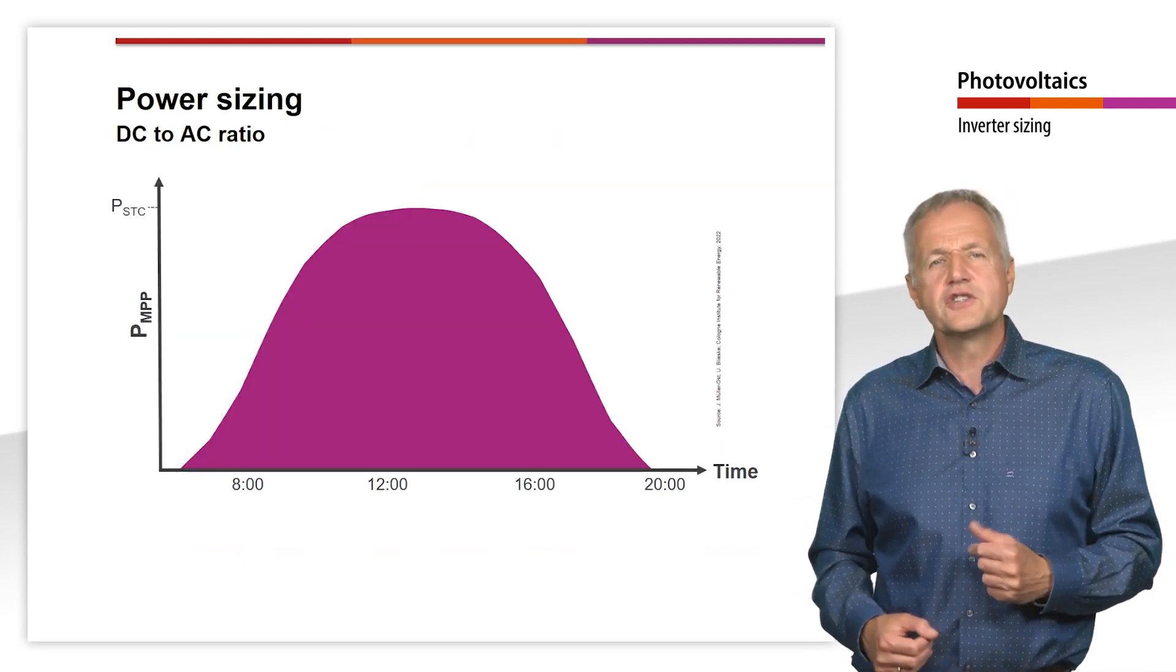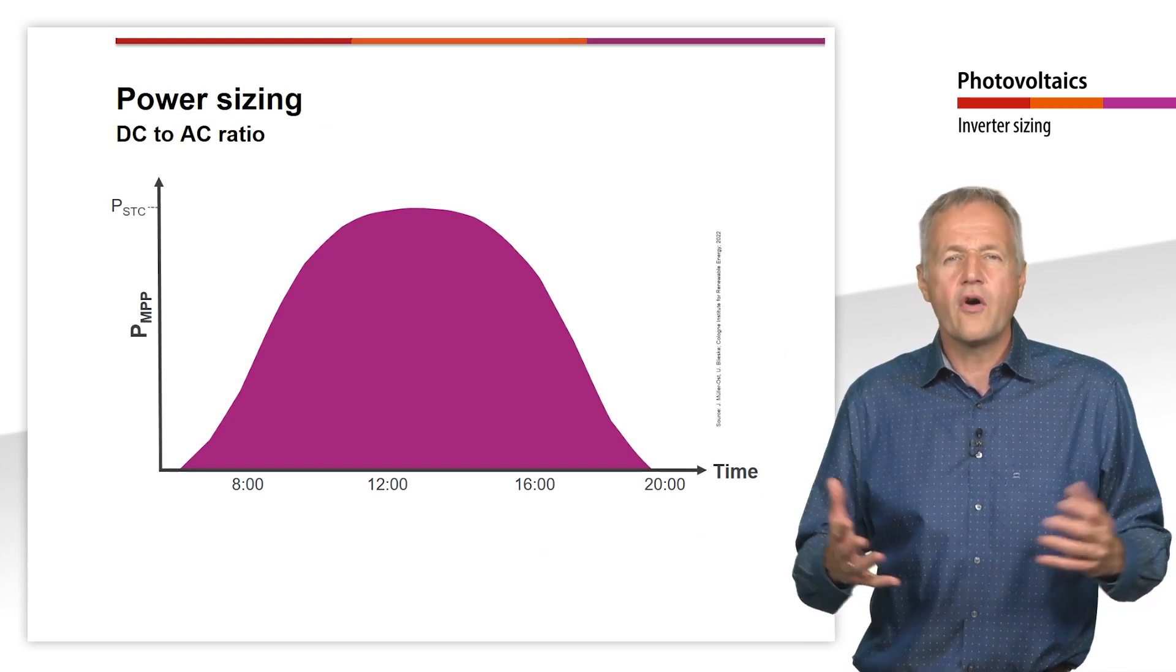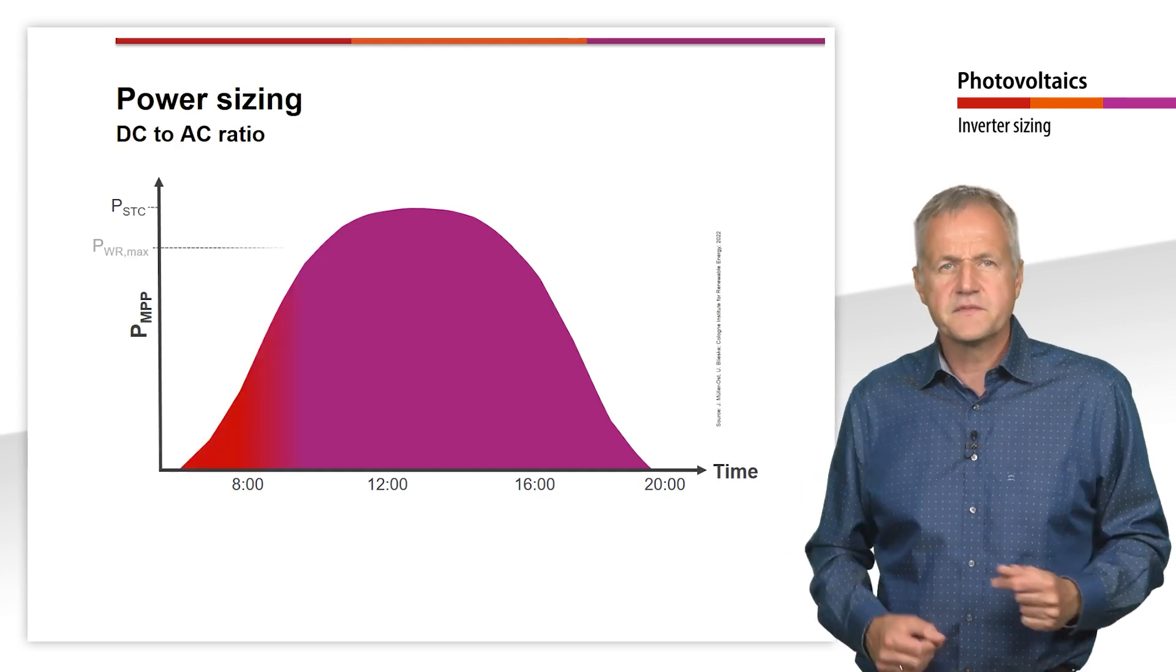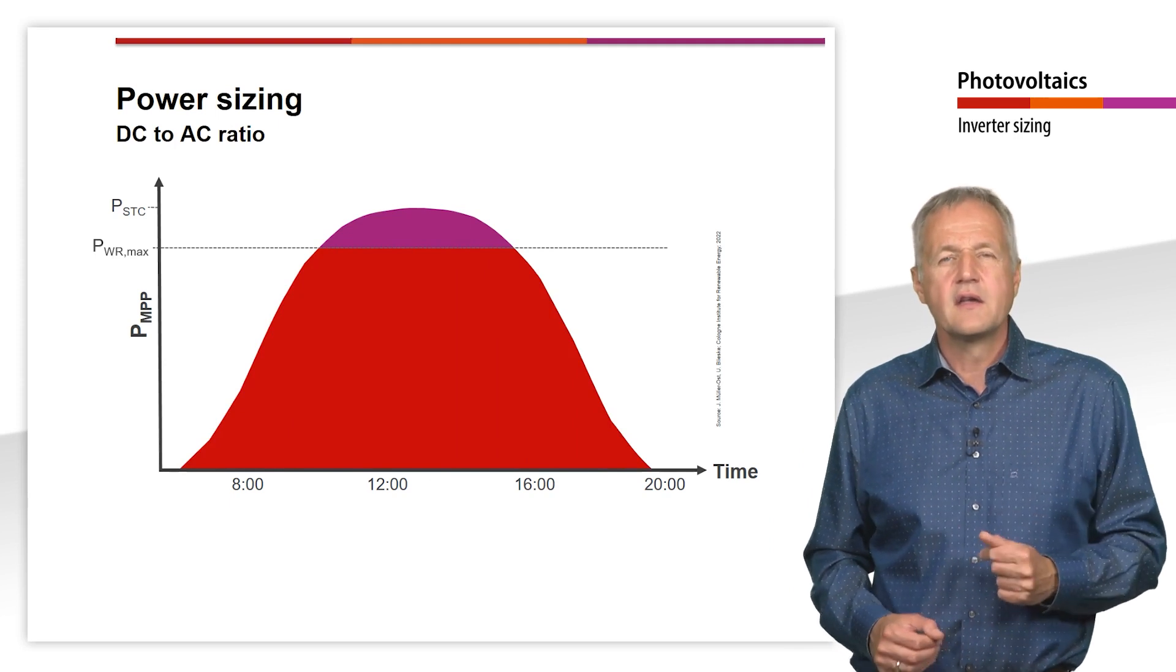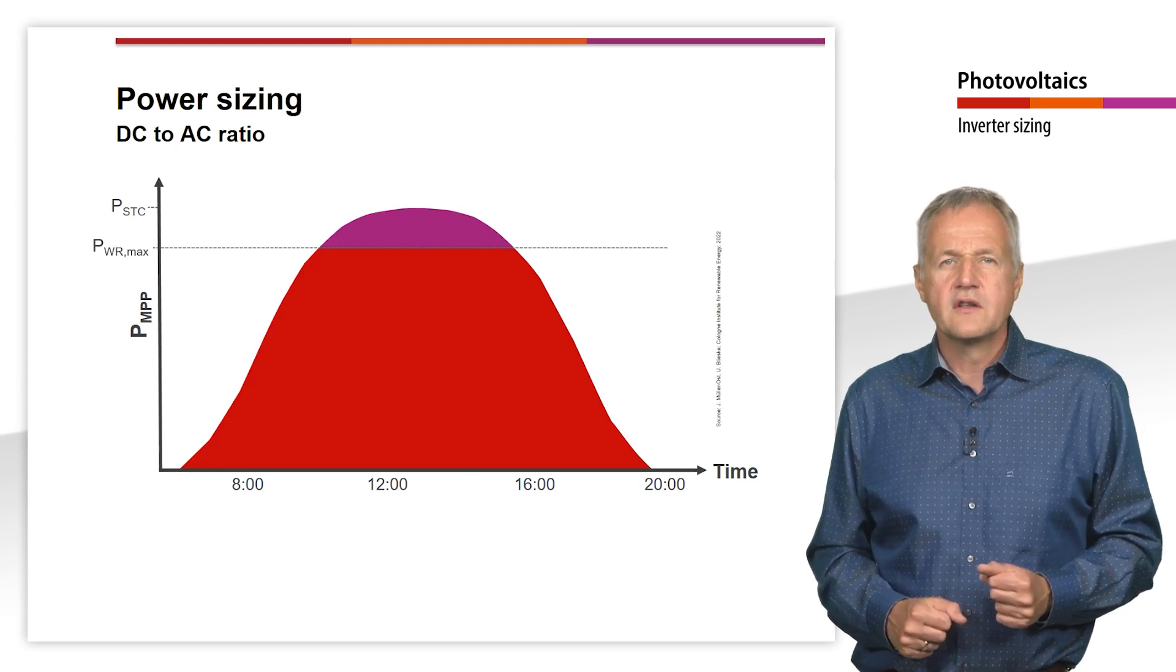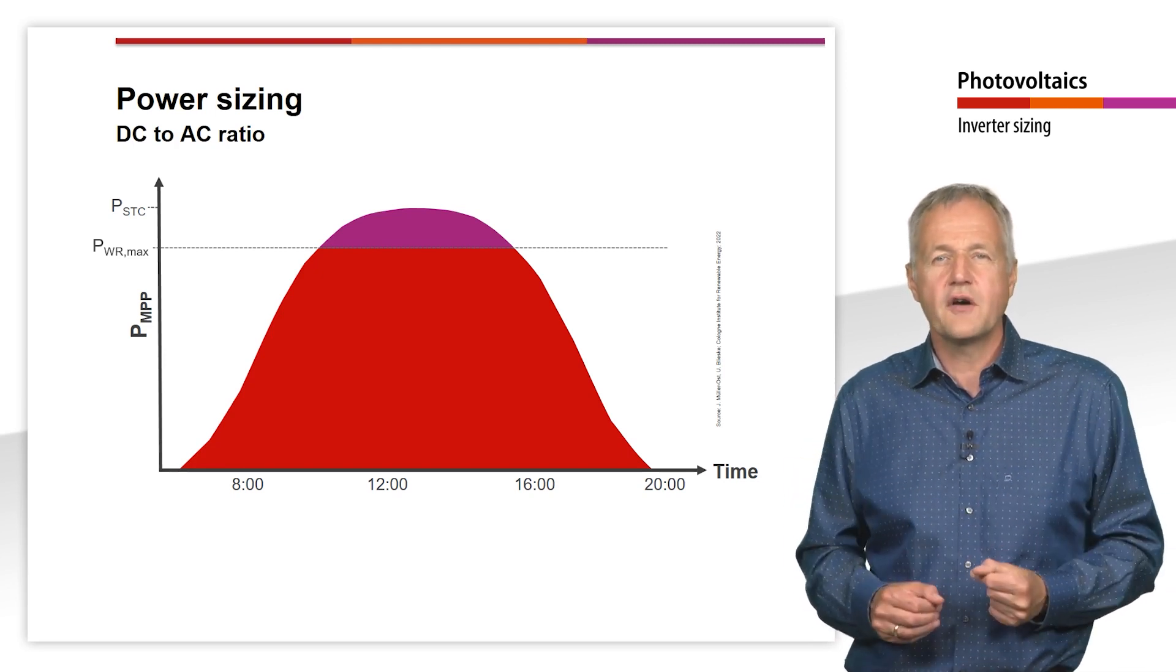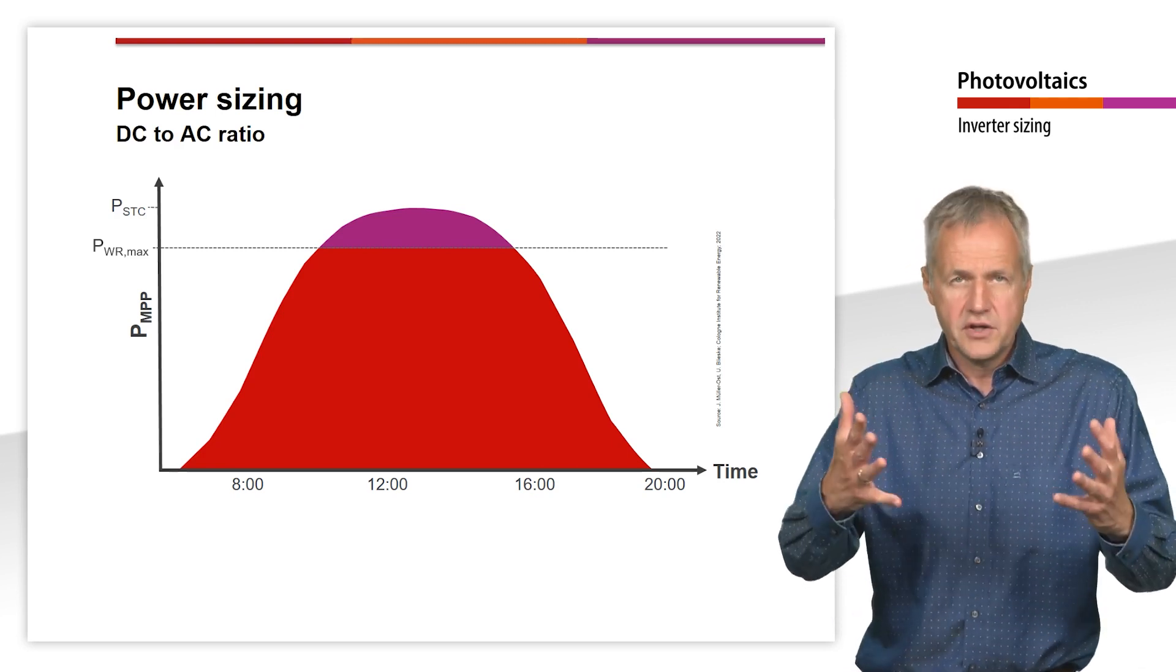You can never destroy the inverter by undersizing it. The inverter will only be loaded more often with its nominal power and the PV power exceeding this will be derated. The inverter does not switch off when the power is too high, but only reduces the output power to its nominal power. This is also referred to as clipping. Clipping causes losses compared to the theoretical possible yield of the PV generator. But the essential part of the energy can be used.